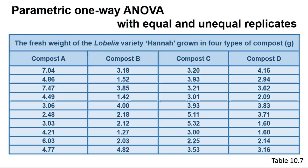For example, Table 10.7 gives the fresh weight of the Lobelia variety HANA, grown in one of four types of compost, eight weeks post-weaning from a tissue culture environment.